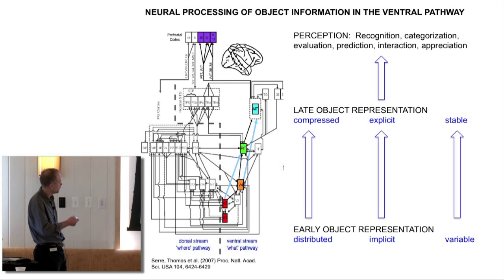I almost always open with this beautiful diagram taken from one of Tommy's papers that outlines stages in the ventral pathway in a Van Essen-style diagram. Here's V1, V2, V4, posterior parts of IT, anterior parts of IT.